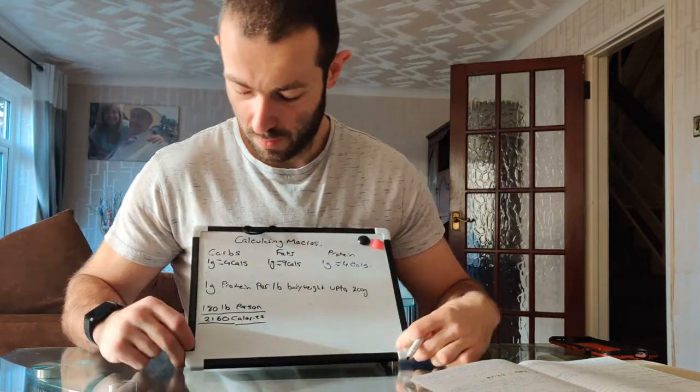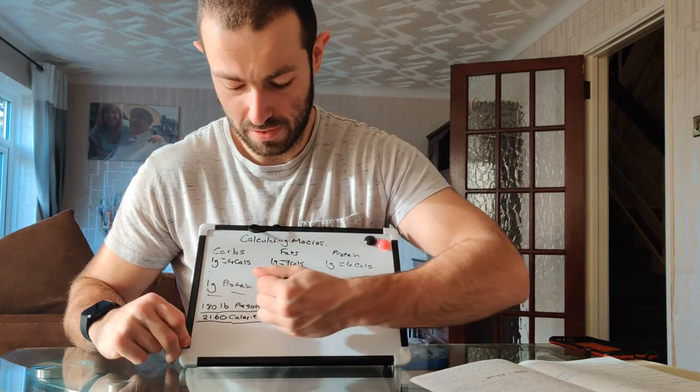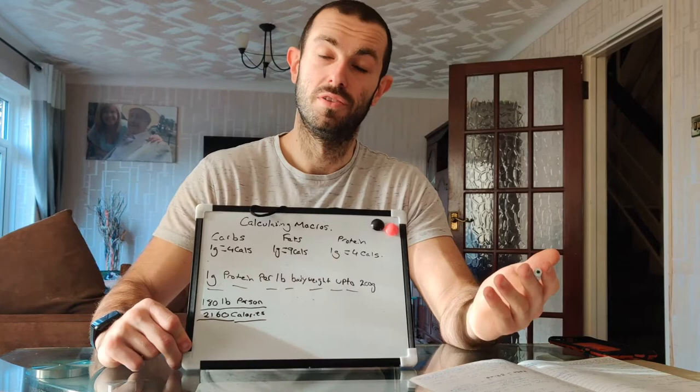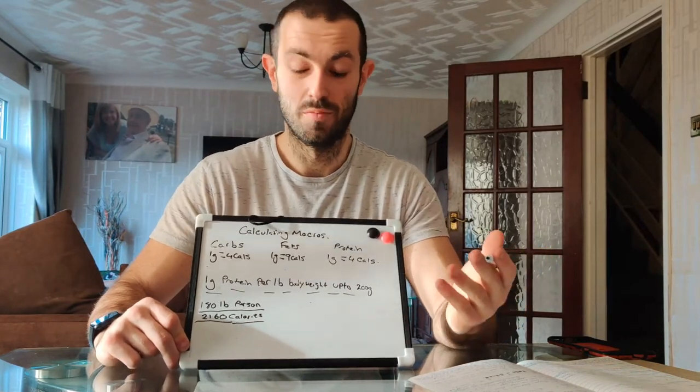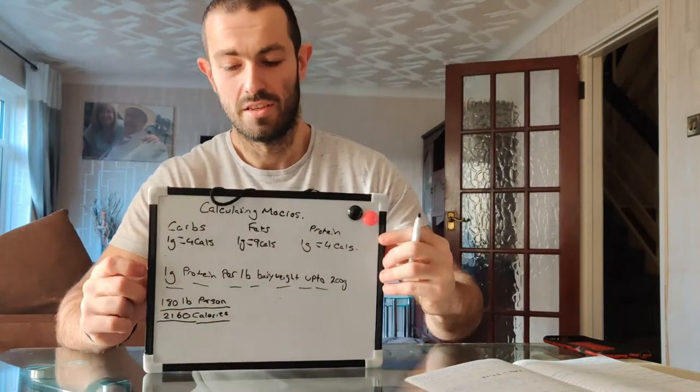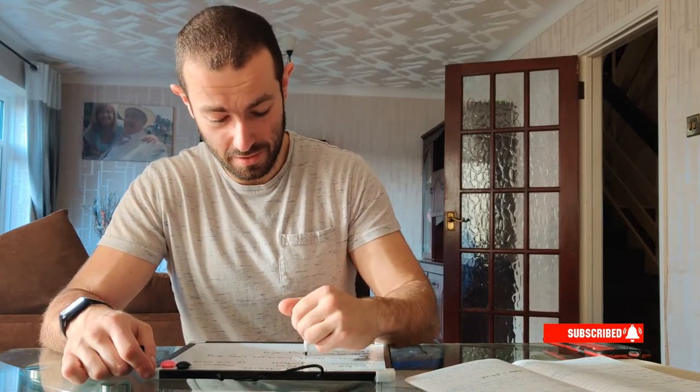My golden rule of thumb is 1 gram of protein per pound of body weight, up until 200. I think 200 grams of protein per day for any person is more than enough, and will keep you not hungry during the day. So you've got 180 grams of protein. You times that by 4, because there are 4 calories in each gram of protein, and that will give you a total of 720 calories in your diet.